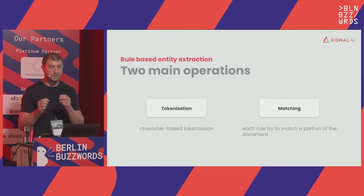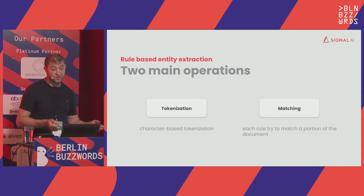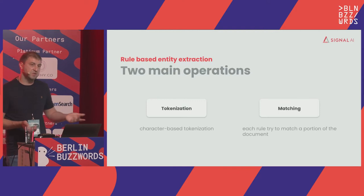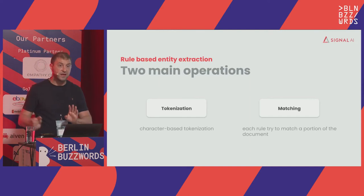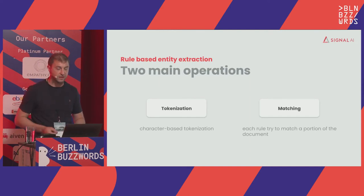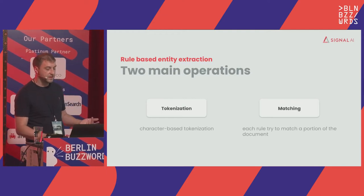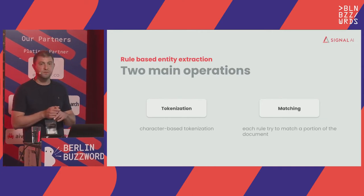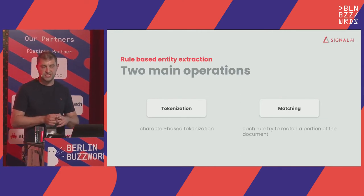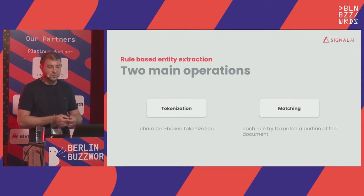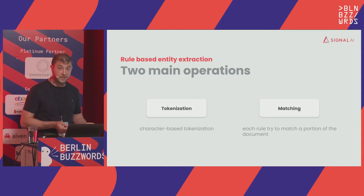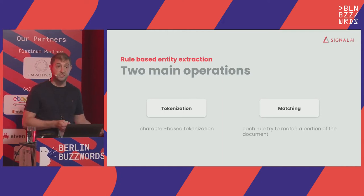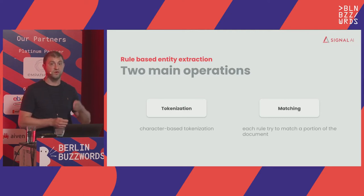The existing system does two main operations: tokenization and matching — and regex is doing these operations in place. The tokenization is character-based, character by character. The matching, for every single rule, has to find the pattern as we scroll through the characters. The matching part we can't really escape — every rule is different and has to be computed against the document. But the tokenization is producing a lot of waste: we are scrolling through the same document over and over.